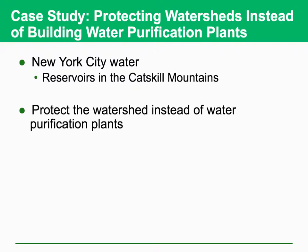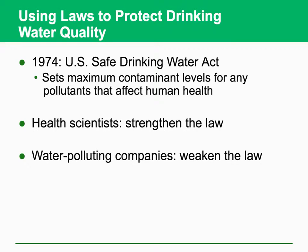There is a case study on protecting the watershed instead of building water purification plants in New York City. There are reservoirs in some mountains, and they try to protect the watershed instead of building water purification plants. When we want to protect water quality, it is important to use laws because without environmental regulations, there is no reason to make people clean up the water.